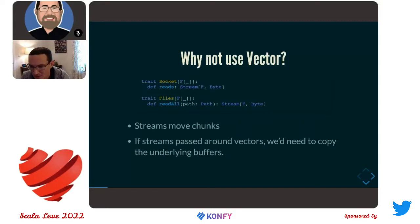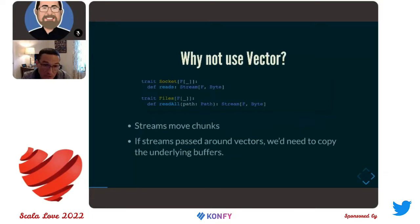That way, if you have some binary protocol where a message frame is 18 bytes, you want to be able to use the take operation on that stream to take those 18 bytes, then process them and decide what to do next. So from a design constraint perspective, we said streams have to have this internal ability to move around collections. That's why when we first started prototyping with early versions of Scalaz Stream, that internal vehicle for moving data through a process was a vector.